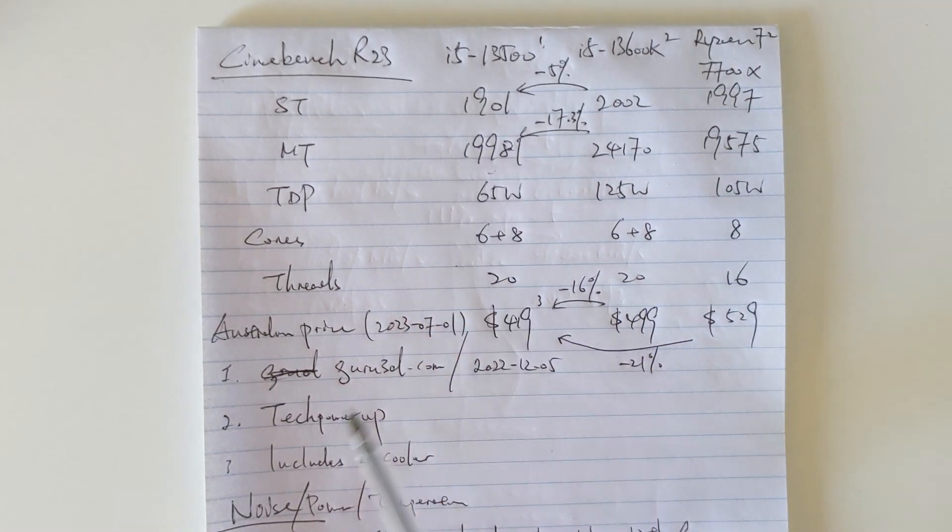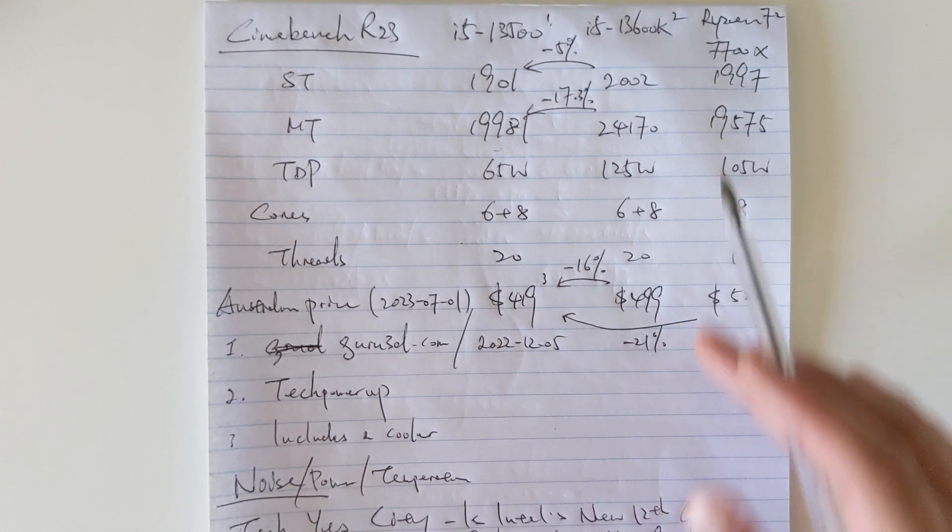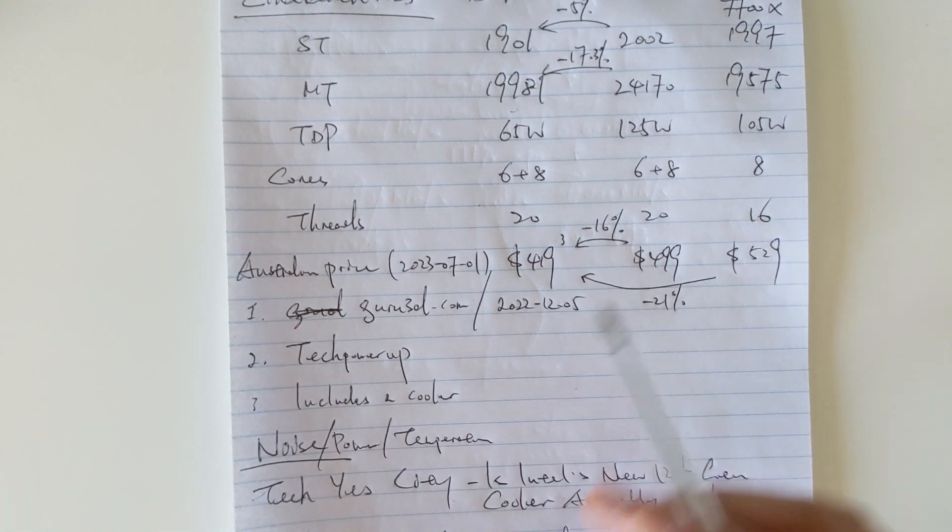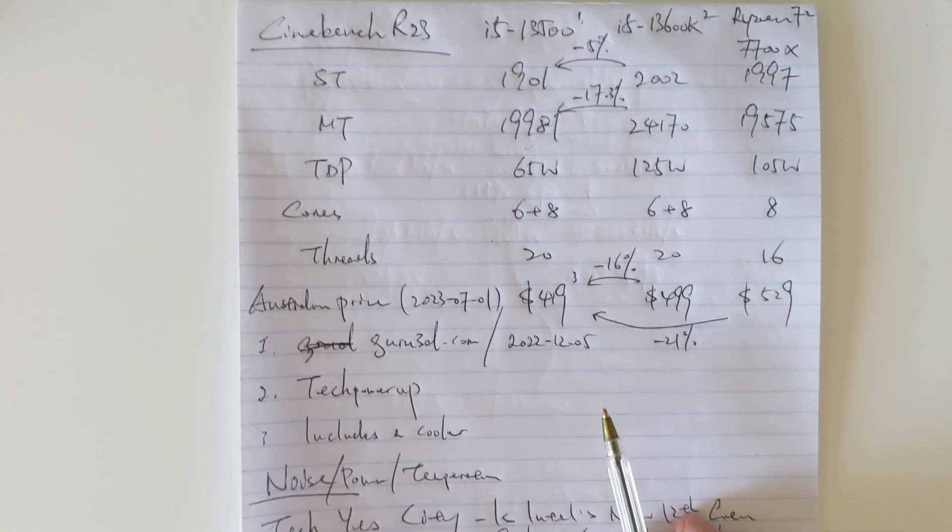Anyhow, I got those numbers from Guru3D. The article date is 5th of December. The other two columns of data are from TechPowerUp.